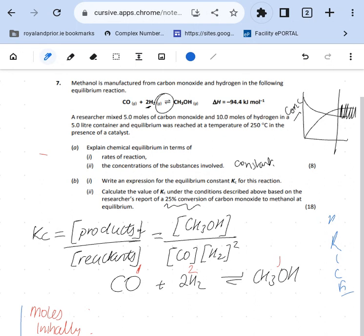So what have we got initially here? A researcher mixed five moles of carbon monoxide, so my moles initially is five moles there, ten moles of hydrogen, and a five liter flask. Now five liters is going to come out at the very end, and I've got zero moles of methanol.